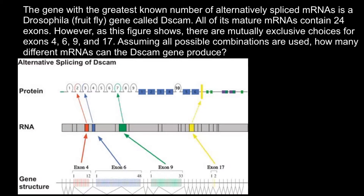Hello and welcome to Nikolai's Genetics Lessons. Today's problem is: the gene with the greatest known number of alternatively spliced messenger RNAs is a Drosophila fruit fly gene called DSCAM. All of its mature messenger RNAs contain 24 exons. However, as this figure shows, there are mutually exclusive choices for exons 4, 6, 9, and 17. Assuming all possible combinations are used, how many different messenger RNAs can the DSCAM gene produce?